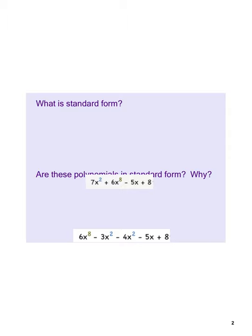Standard form, again as a reminder, is where we take a polynomial and rearrange so that we see the highest order or highest degree term first. So the 6x to the 8th would go first, followed by a positive 7x squared, then subtracting the 5x and adding the 8 at the end.